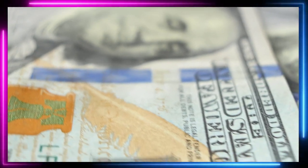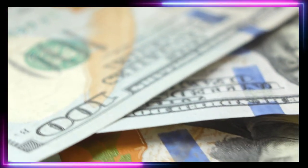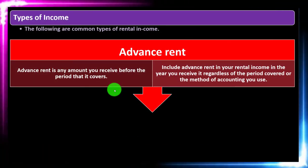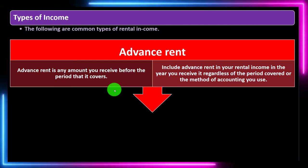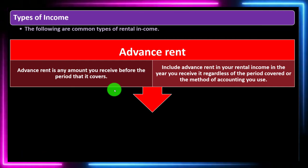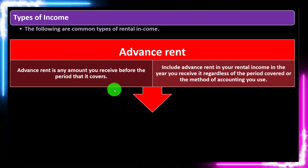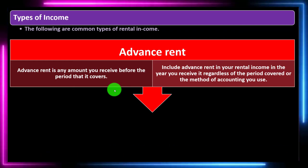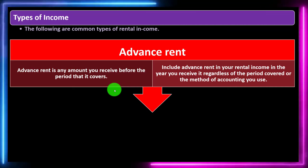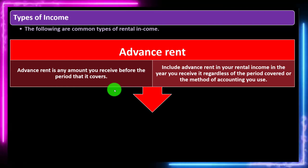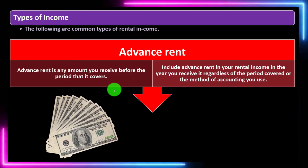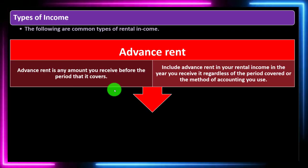Under standard accrual accounting, you'd record an advanced payment as a liability, not income. However, the tax code deviates here: include advanced rent in your rental income in the year you receive it, regardless of the period covered or the method of accounting you use. So even if you use the accrual method, the IRS wants you to record that money when you have it.